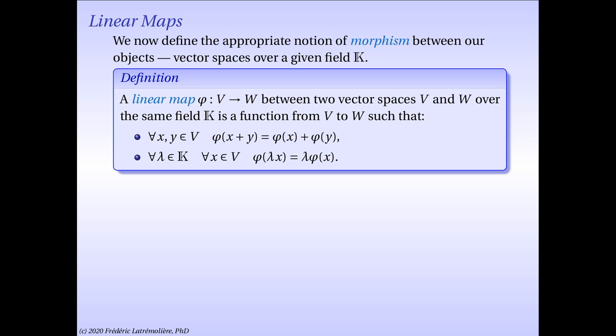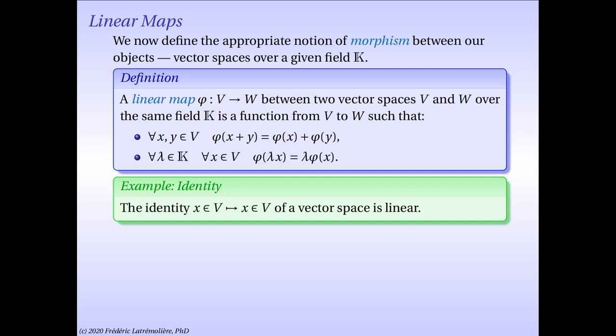The first property here means that phi is, in particular, a group morphism from the additive group of V to the additive group of W.